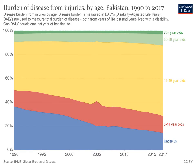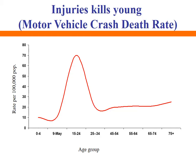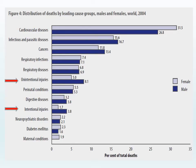Looking at which age group is most susceptible to road traffic injuries in Pakistan, the data from 1990 to 2017 shows an increase over time. For motor vehicle crashes specifically, the peak age group is 15 to 24 years of age.